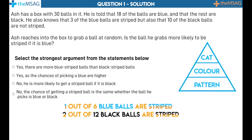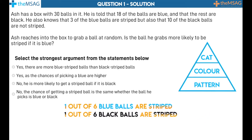We know 2 out of 12 black balls are striped. 2 and 12 both have the number 2 as a common factor, so dividing by 2 gives us 1 out of 6 black balls are striped. This means that Ash is not more likely to get a striped ball if it is blue. The answer is therefore no — the chance of getting a striped ball is the same whether the ball is blue or black, since the probability is 1 in 6 for both. The fractions are equal.